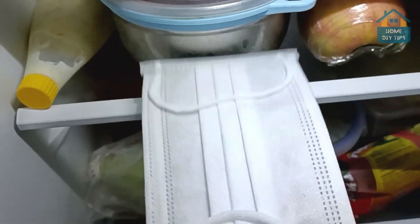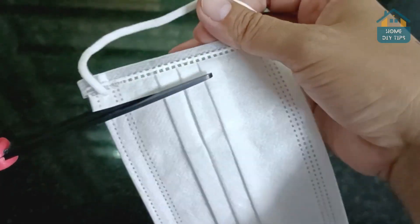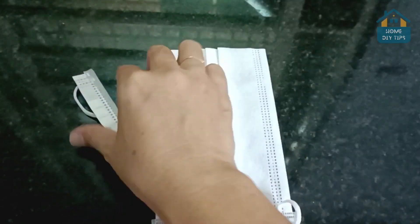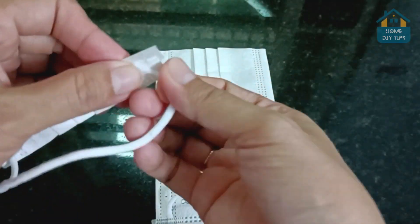First things first, grab a face mask and cut open one side. We're creating a pocket, so make sure to cut off just one side.